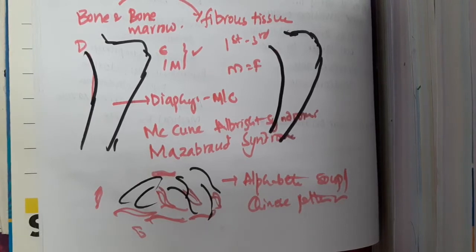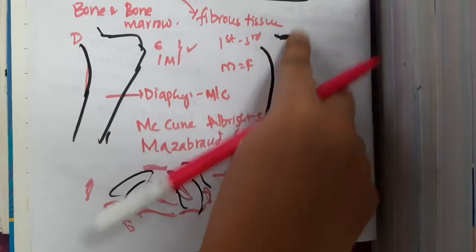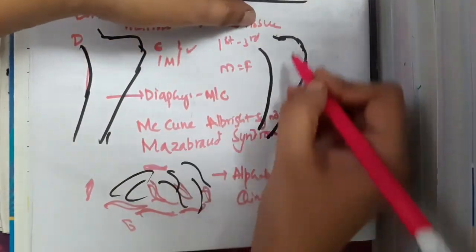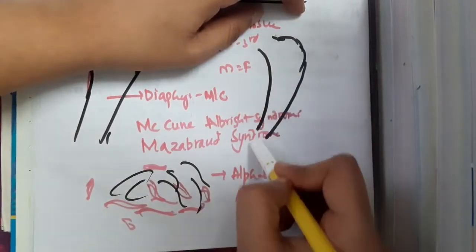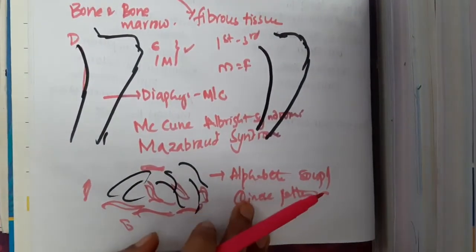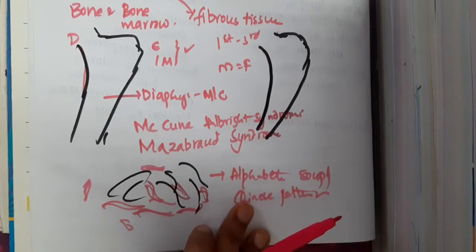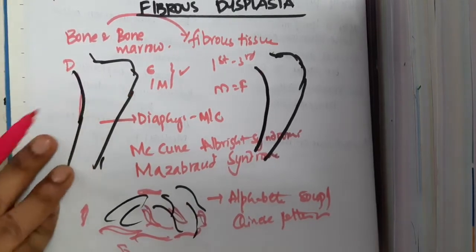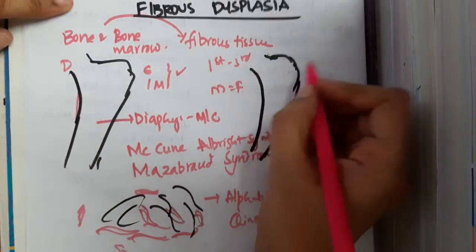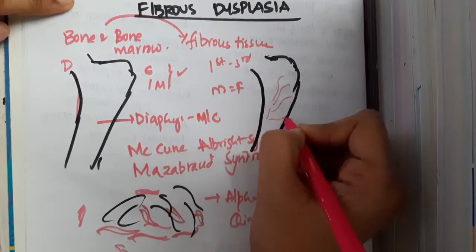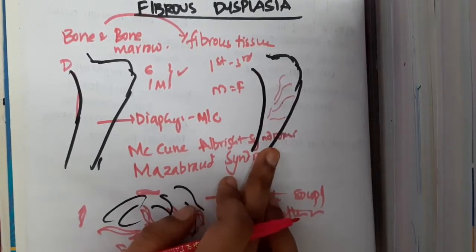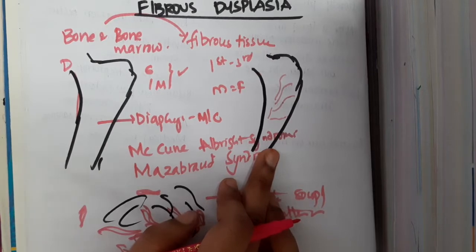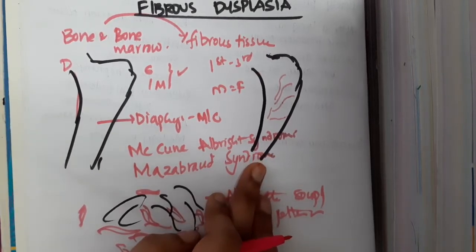Treatment involves osteotomy and internal fixation — the bent bone is corrected and internally fixed. Bisphosphonates are also given to prevent malignant conversion. On imaging, scalloping of bone areas may also be seen. Fibrous dysplasia is a developmental abnormality.